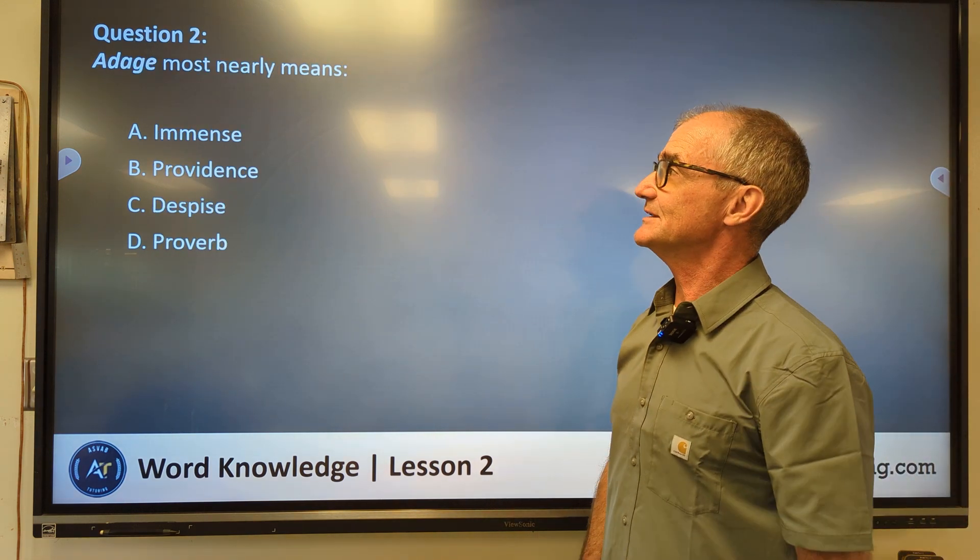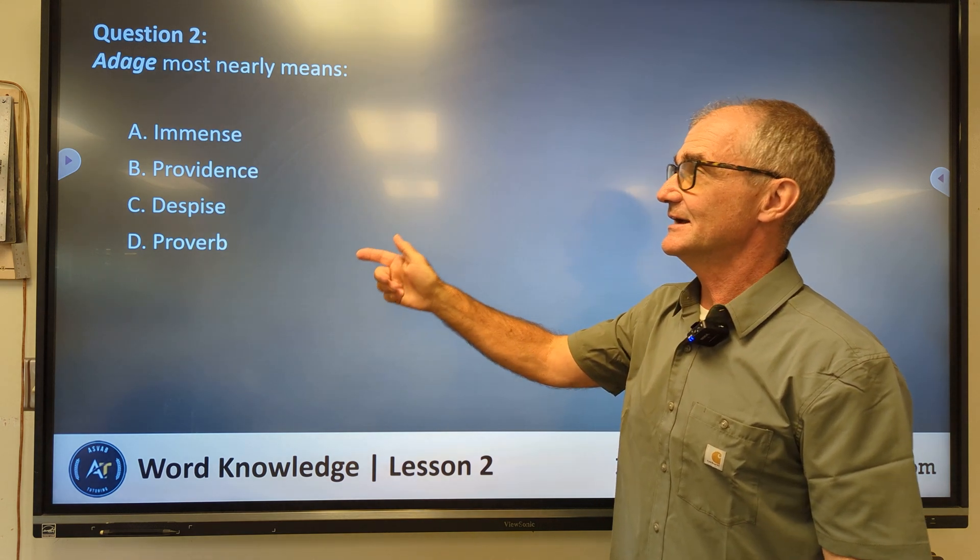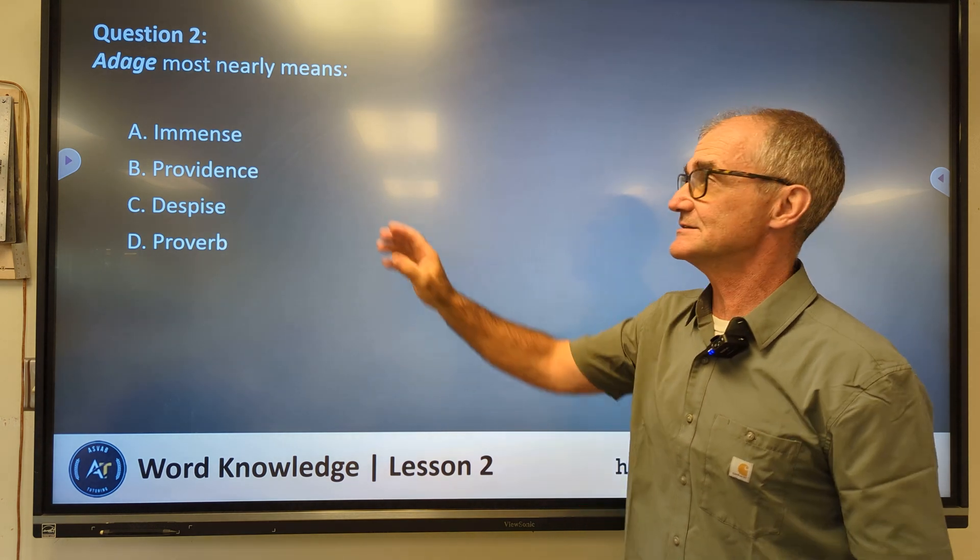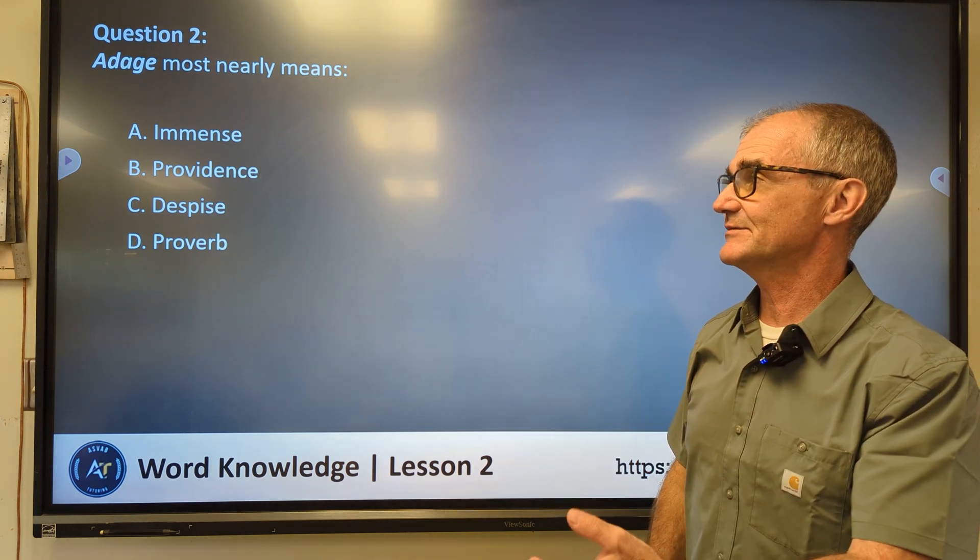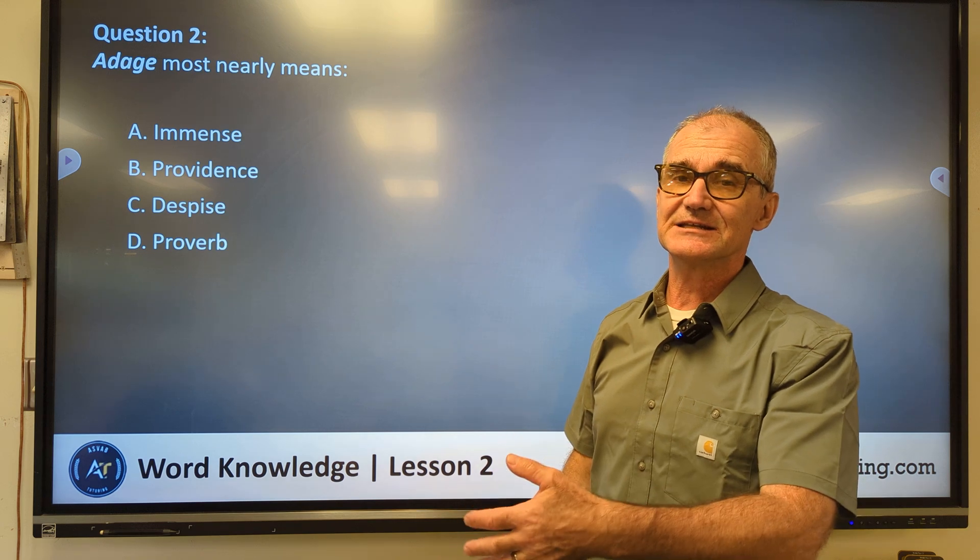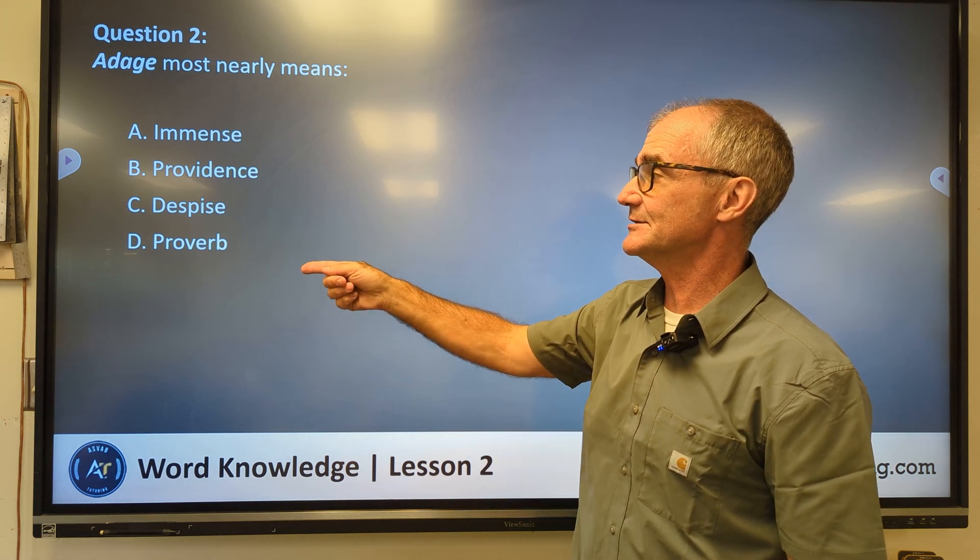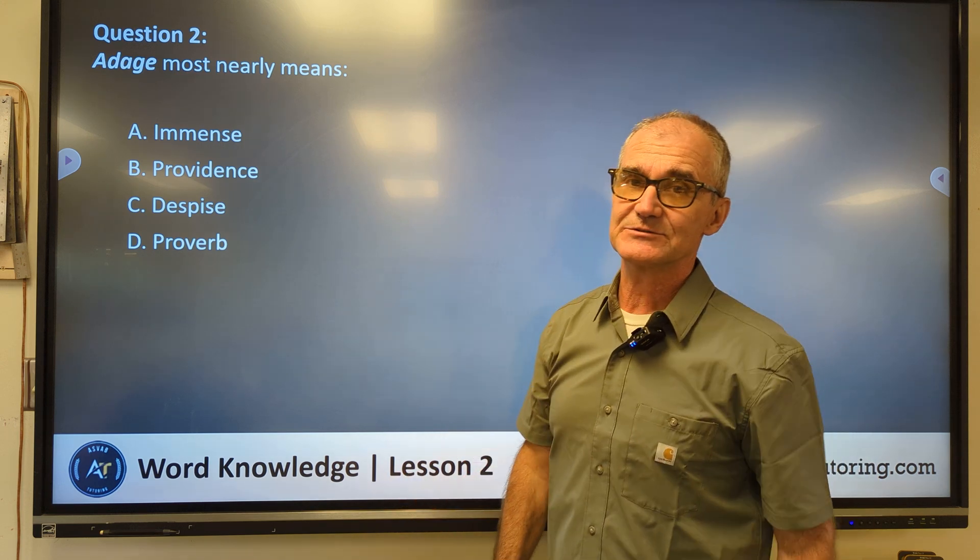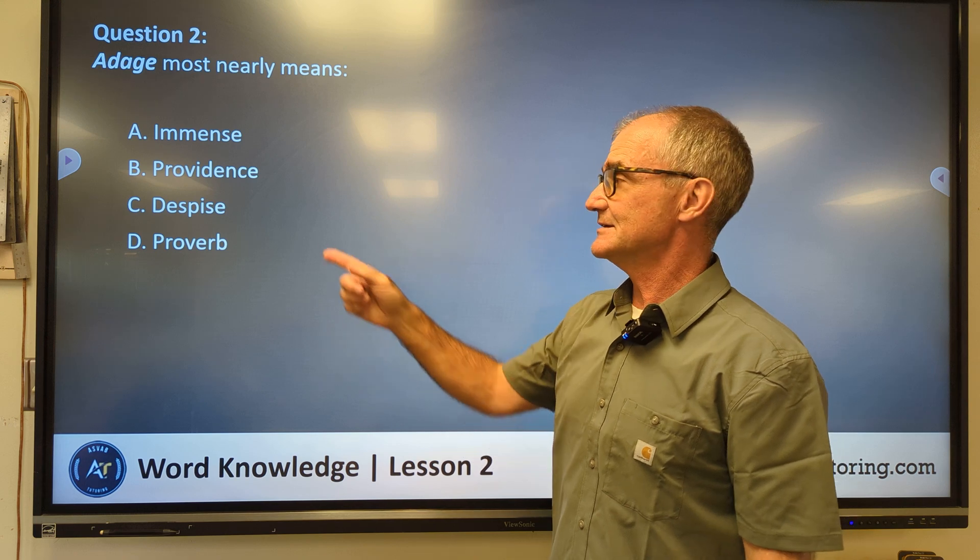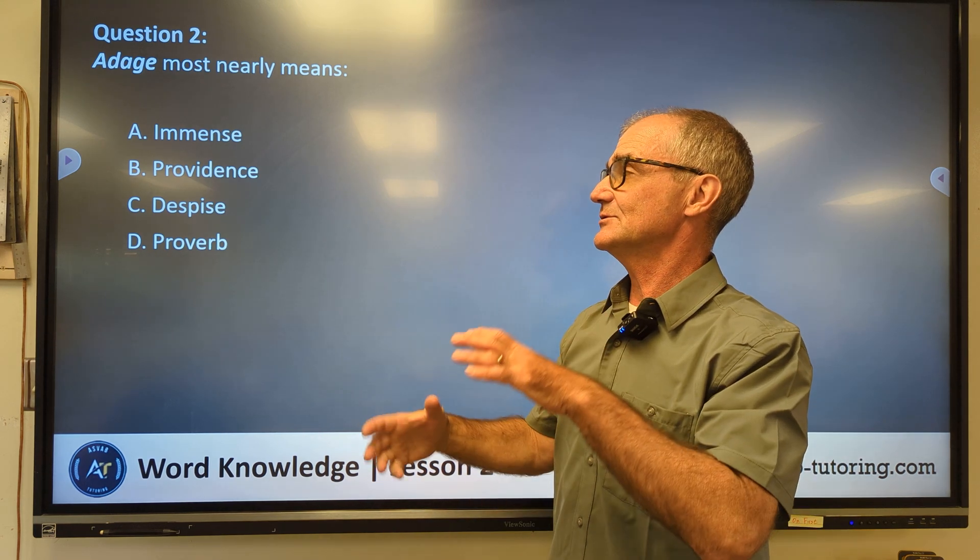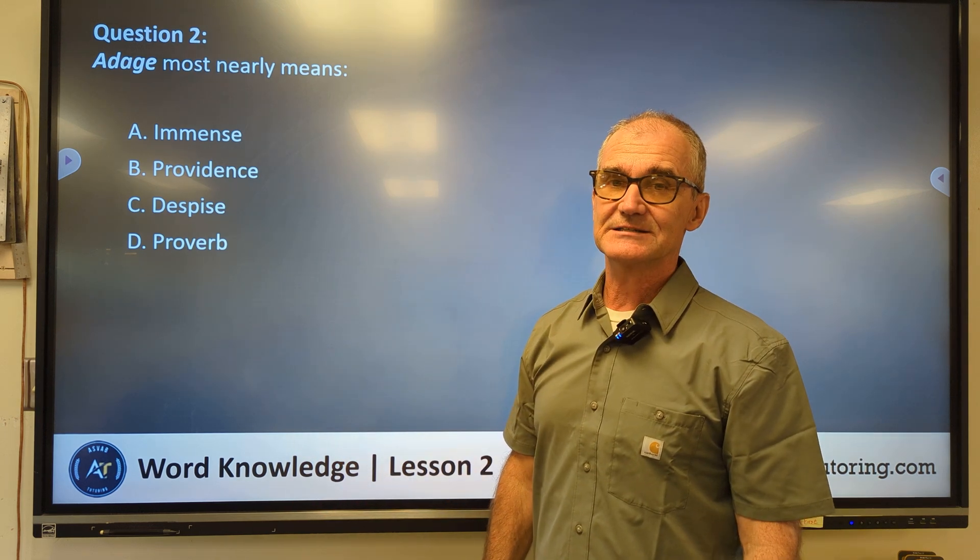Question number two, pause the video, see if you can figure out what adage means by looking at all of these answers here. Again, almost all the word knowledge is going to be one word and then a list of synonyms. Synonyms are words that mean the same thing versus antonyms, words that mean the opposite. So on adage, you're probably going to have a list of synonyms and antonyms, and you've got to figure out which one's correct. An adage is like a proverb, is the correct answer D. It's like a short little idea, a story for you to learn something from. So that's what adage.